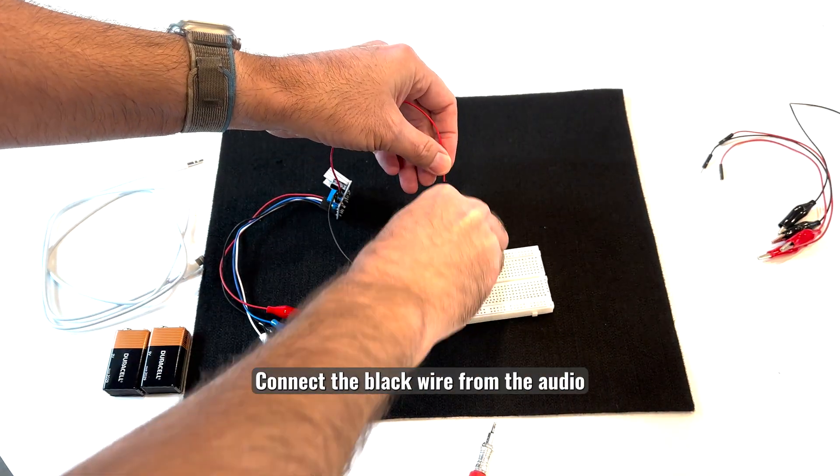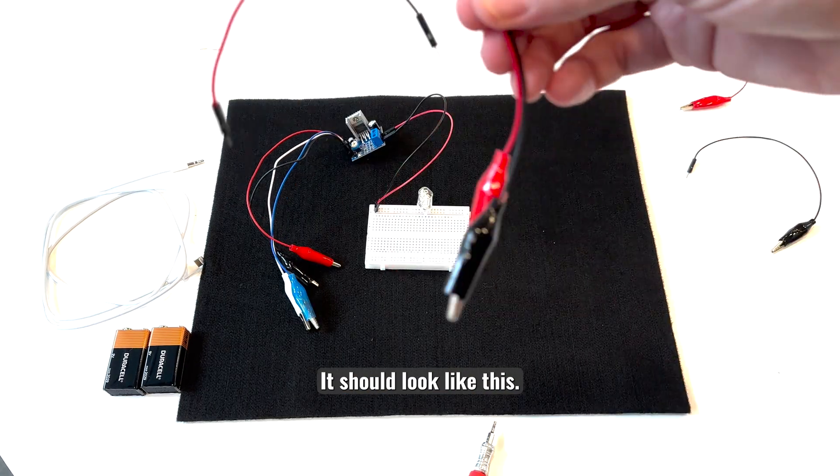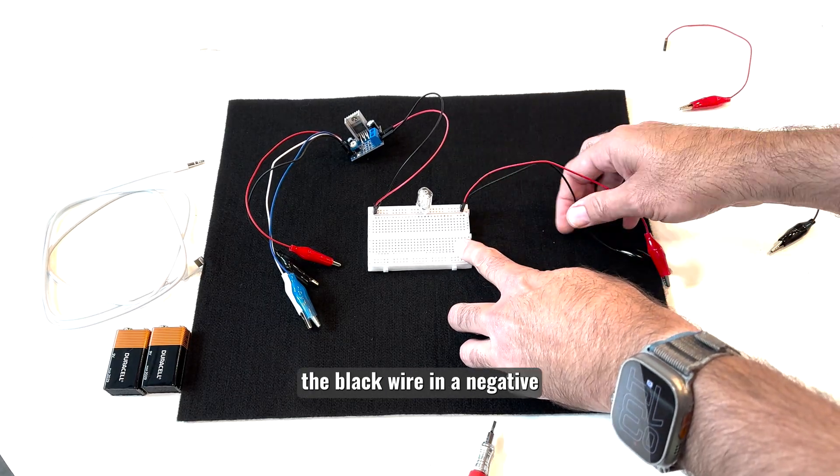Connect the black wire from the audio amplifier to the negative, and the red wire to the positive. It should look like this. Next, connect two male to alligator clip jumper wires, and plug the black wire into negative and red wire into positive.